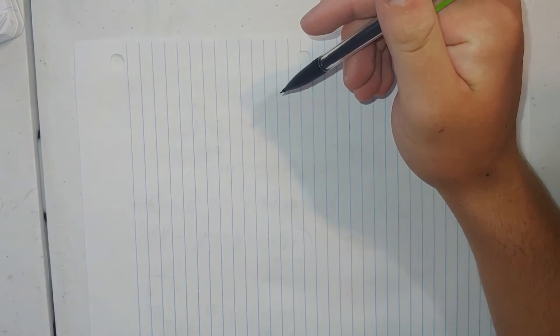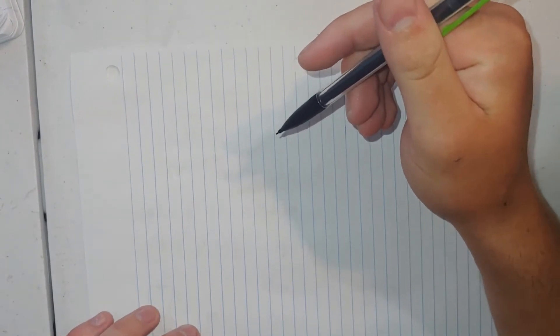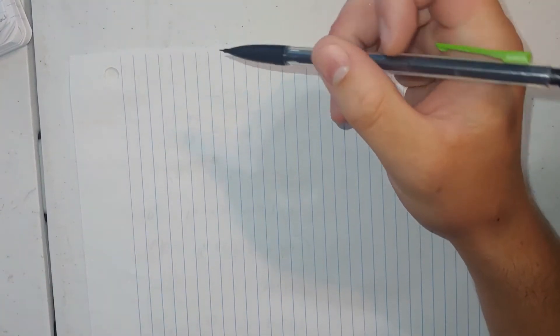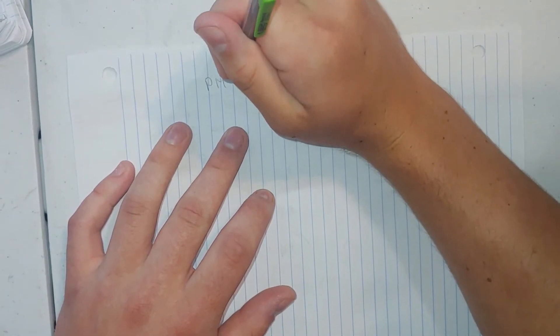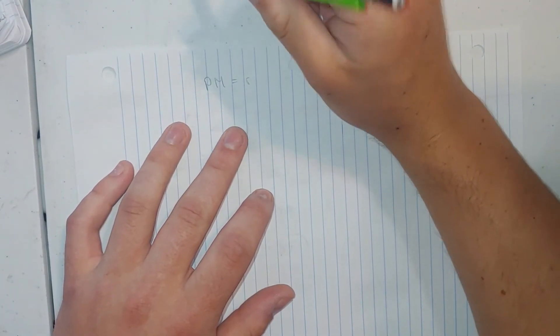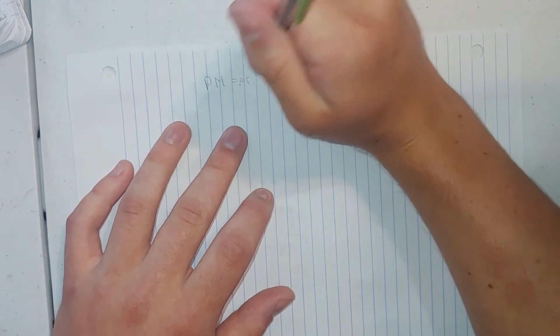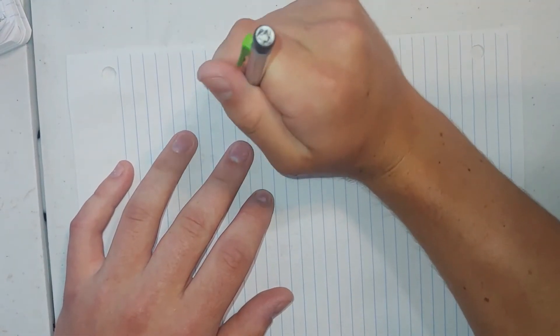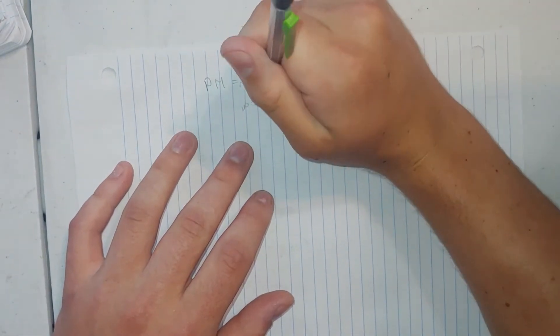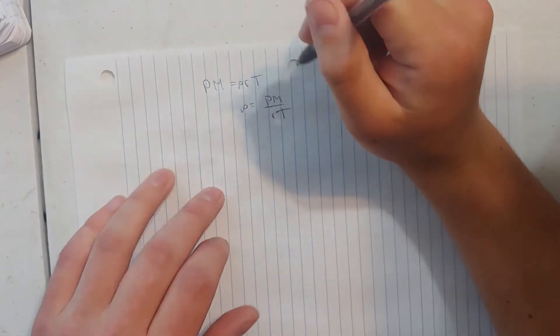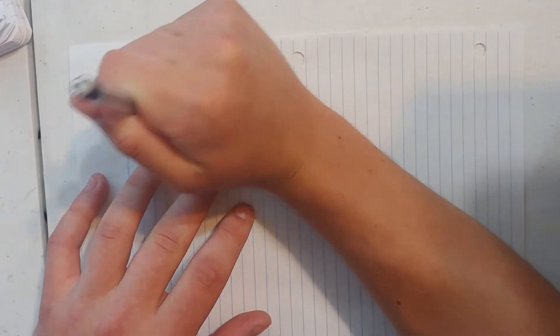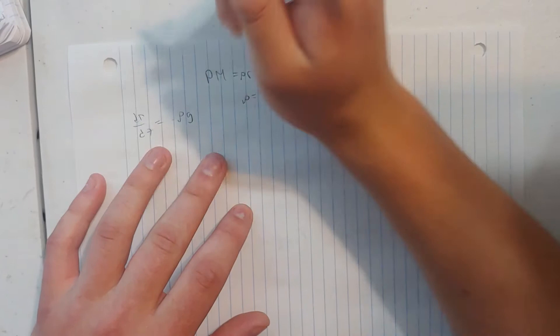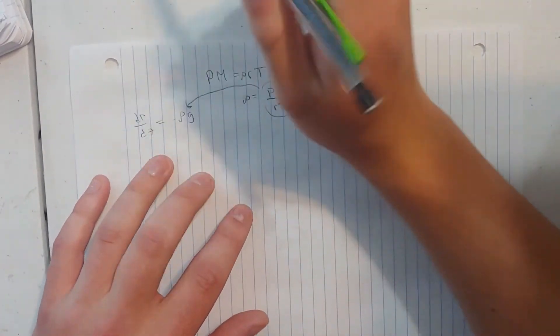So now we're going to use this to actually put some numbers in and solve for an actual pressure change due to an altitude change. So we know for our ideal gas law, pressure times molar mass equals the gas constant times ρ times temperature. So by solving for density, we get density equals PM over RT.